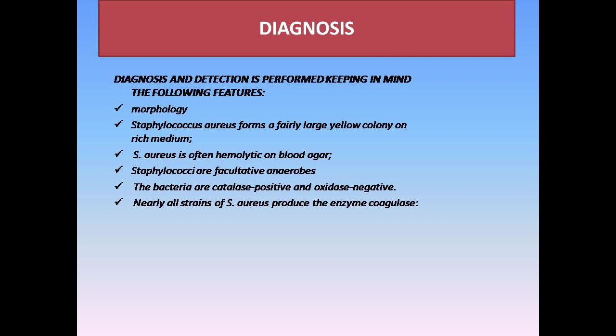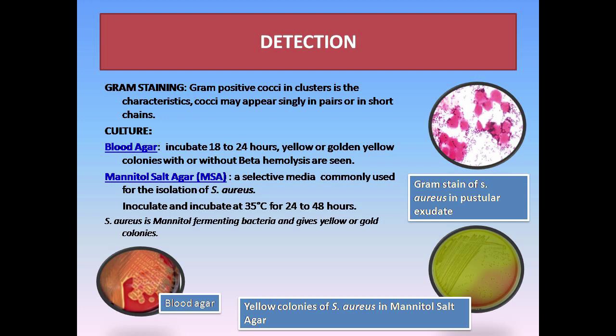For diagnosis and detection of Staphylococcus, we consider its morphology, pigment color, hemolytic nature, facultative nature, catalase nature, and oxidase and coagulase nature. In gram staining, we exploit the morphology of S. aureus — it is gram-positive and cocci in clusters, which helps in detection. However, this test alone is not sufficient. In culture on blood agar, we incubate for 18–24 hours. Yellow or golden-yellow colonies with or without beta-hemolysis indicate Staphylococcus is present, exploiting its hemolytic nature.